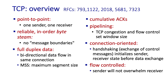TCP uses cumulative ACKs, as in go-back-N. It's a pipelined protocol. It's also connection-oriented, which means that there's a handshake that occurs between the sender and the receiver before data actually begins to flow — we'll take a look at that handshake procedure shortly. And TCP is also flow-controlled, which means that the sender and the receiver are speed-matched, so the sender won't overwhelm the receiver with data.